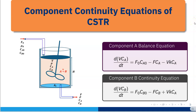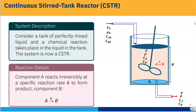Today I will talk about the component continuity equation of a CSTR. Here is the system description: consider a tank of perfectly mixed liquid where a chemical reaction takes place. This system is a CSTR, and component A reacts irreversibly at a specific reaction rate K to form product component B. So the reaction is A to B, and K is the reaction rate constant.